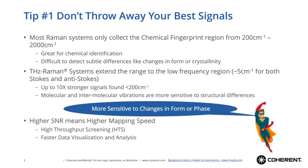The higher signal strength present in the low-frequency region means you have a much larger signal-to-noise ratio. That can enable higher mapping speeds, lower excitation power from the laser — meaning a lower chance of damaging the materials — and faster data visualization for analysis of results. This can be really crucial for applications such as high-throughput screening.